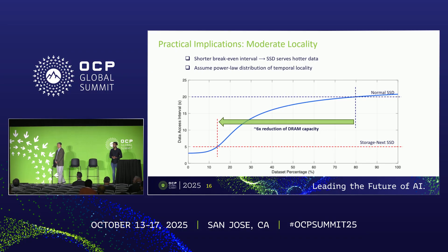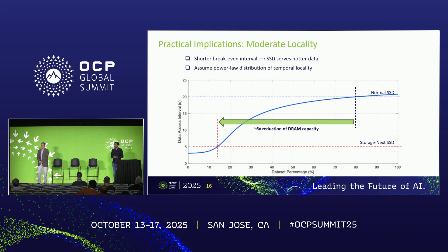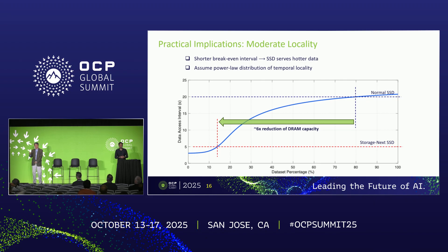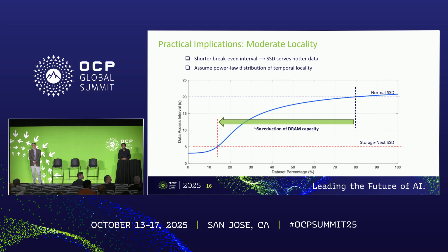Audience question: Why not 64 bytes? Response: Flash vendors would come after us for that! The NVMe protocol has a 64-byte submission queue, so you'd have 100% overhead, which makes no sense. But still, nothing is impossible — you still need to account for that overhead.